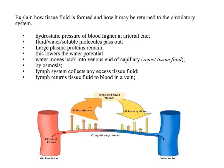You've got filtration here, then tissue fluid where you get the exchange, and then reabsorption. The marking points are: hydrostatic pressure is higher at the arterial end, so water or fluid passes out. The large plasma proteins remain in the capillary bed, lowering the water potential. Water moves back into the venule end of the capillary by osmosis, and any excess tissue fluid gets drained into the lymphatic system.